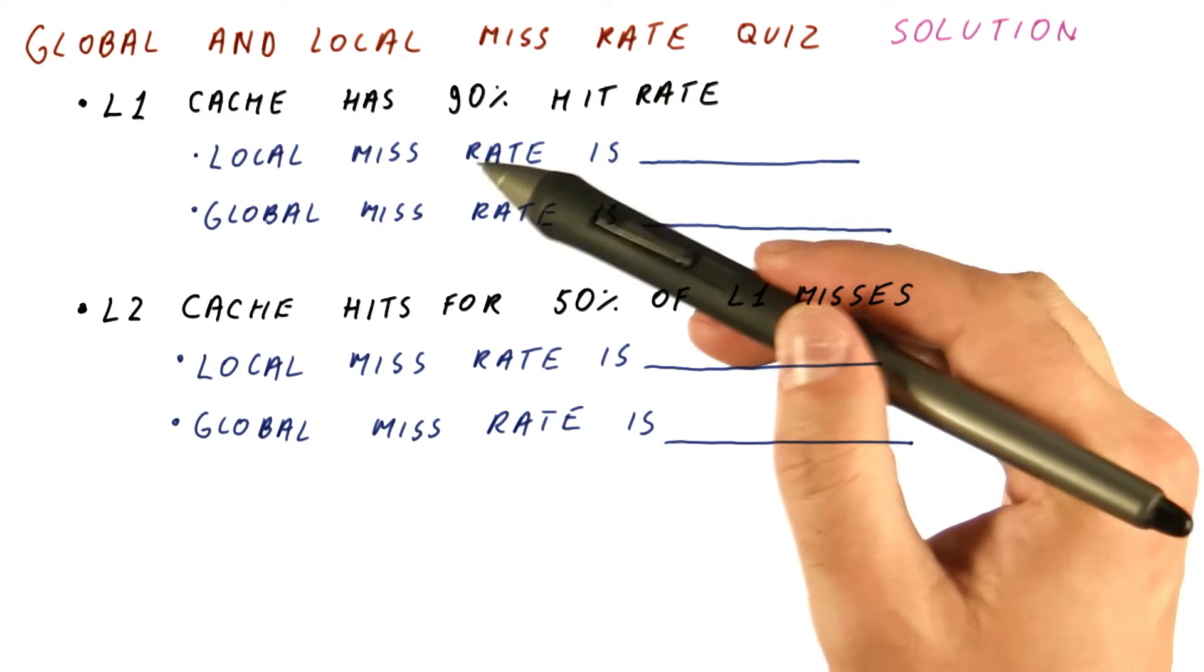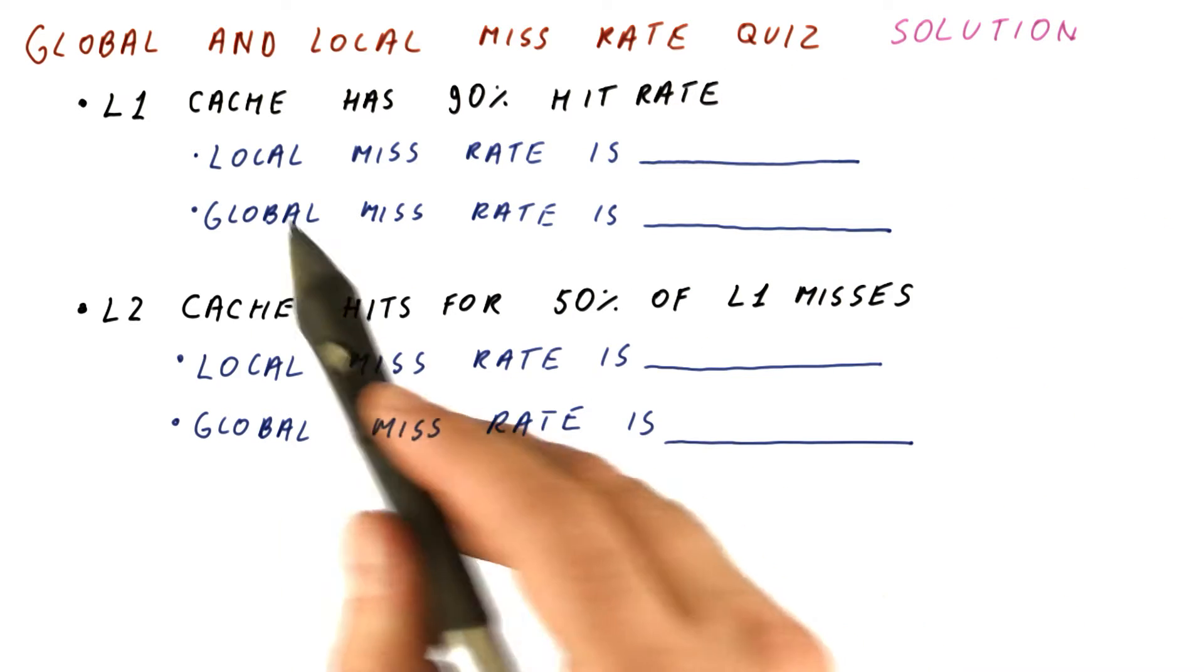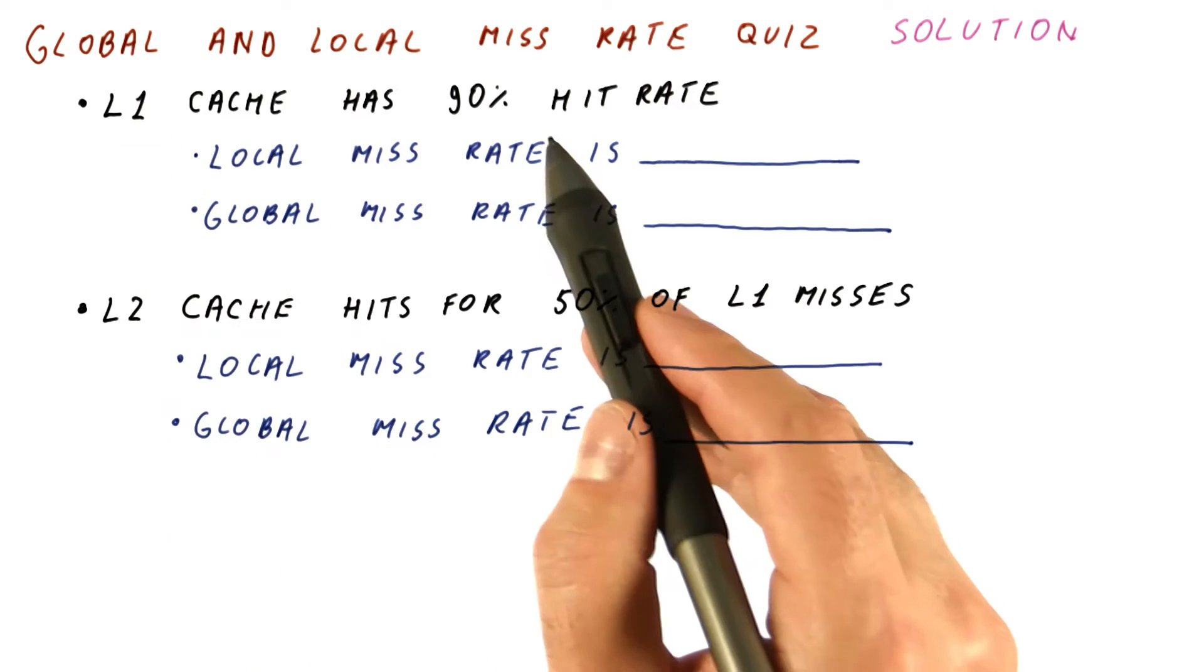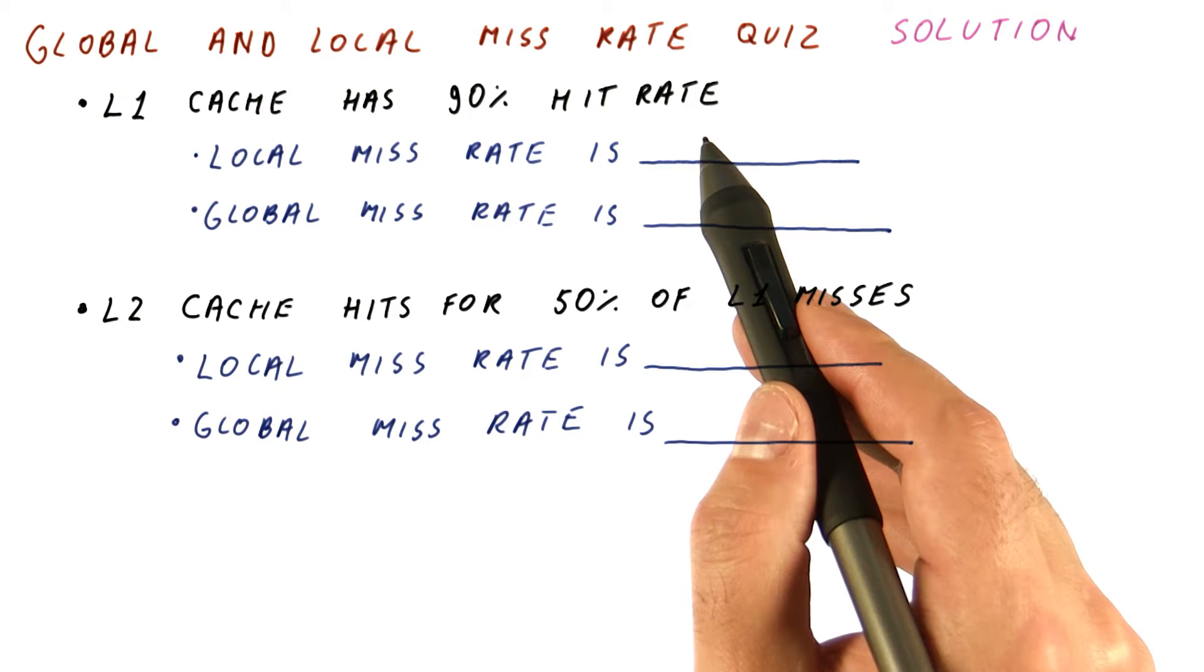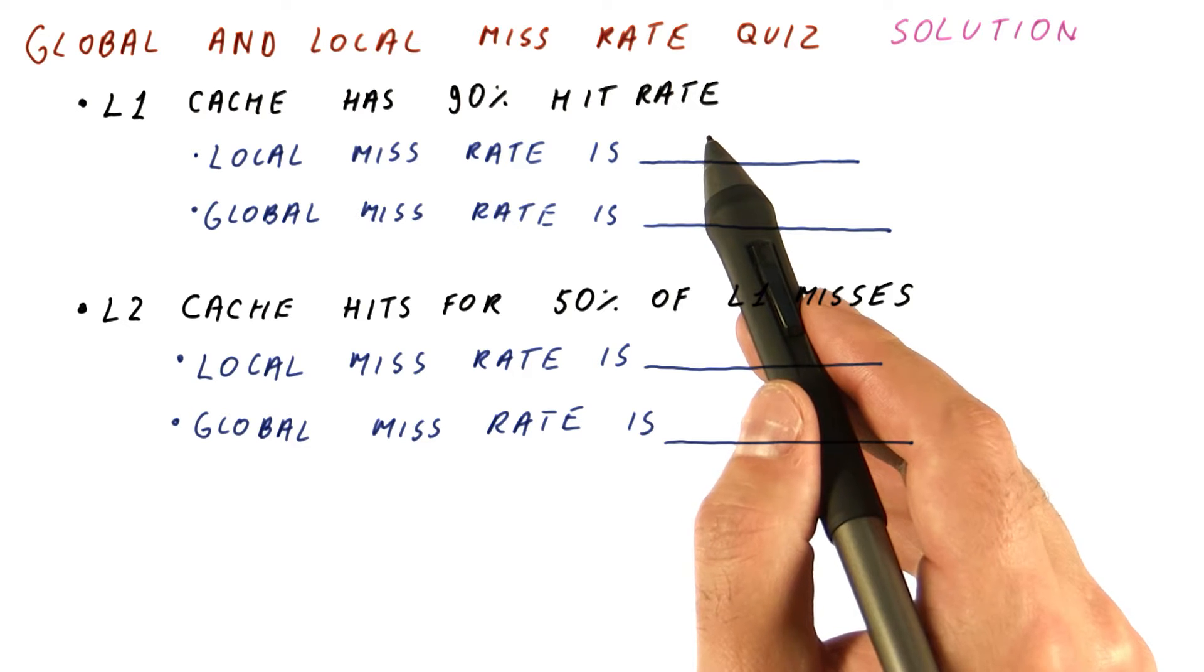Let's look at the solution to our global and local miss rate quiz. For a level one cache, when we say that it has a 90% hit rate, we don't have to specify whether it's a global or local hit rate because it's the same.